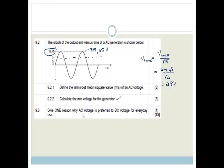Now it says give one reason why AC voltage is preferred to DC voltage for everyday use. And it's always the same reason, guys. It's to prevent loss of voltage or loss of power due to attenuation when your voltage is transported across long distances. Now I'll explain what I've said there.